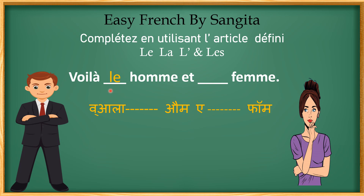Next: voilà ___ homme et ___ femme. Homme means man — it's masculine. But wait: homme starts with a vowel. When two vowels come together, the first vowel is deleted and we use l'apostrophe. So it's not le homme — it's l'homme. Similarly, la femme stays as la femme. So: voilà l'homme et la femme — here is the man and the woman.